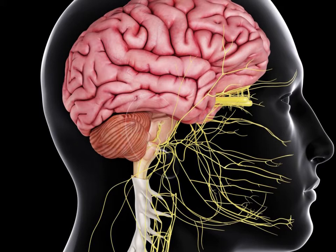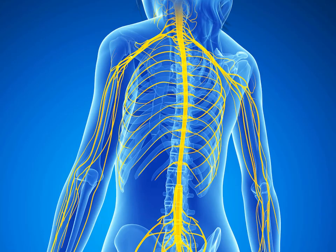Gray matter, which is only gray in preserved tissue and is better described as pink or light brown in living tissue, contains a high proportion of cell bodies of neurons. White matter is composed mainly of myelinated axons and takes its color from the myelin. White matter includes all of the nerves, and much of the interior of the brain and spinal cord.